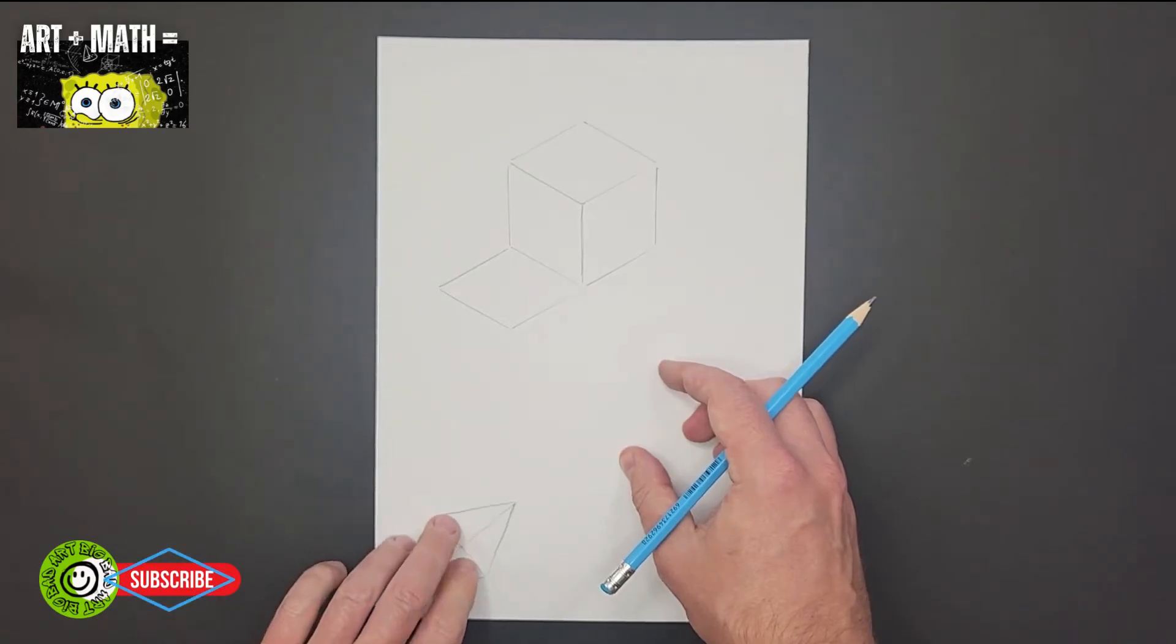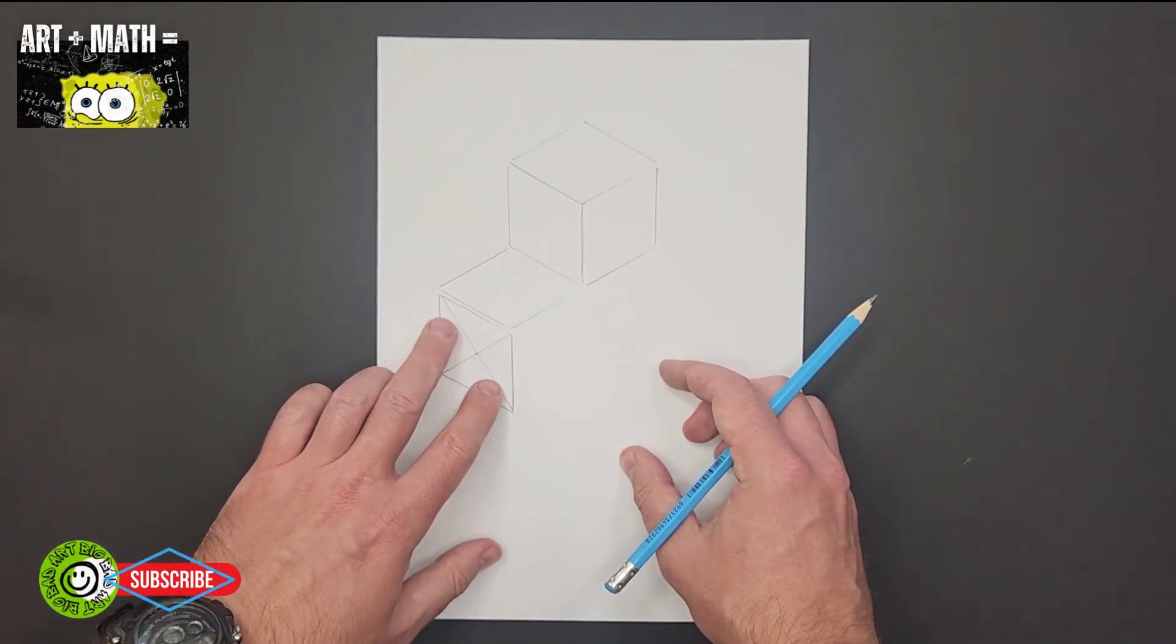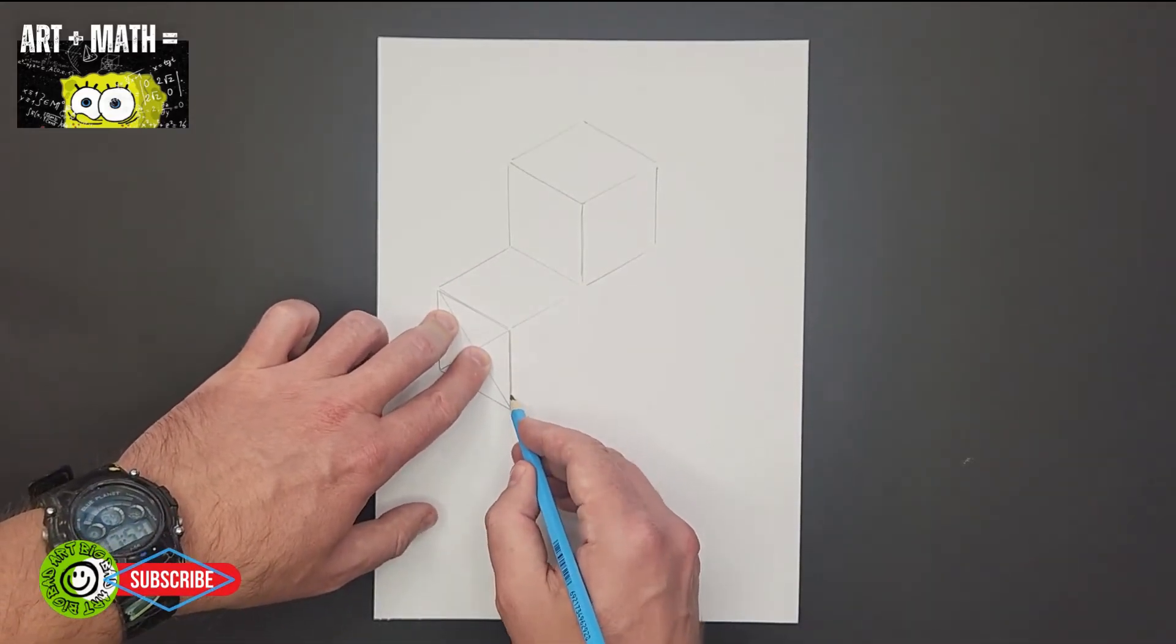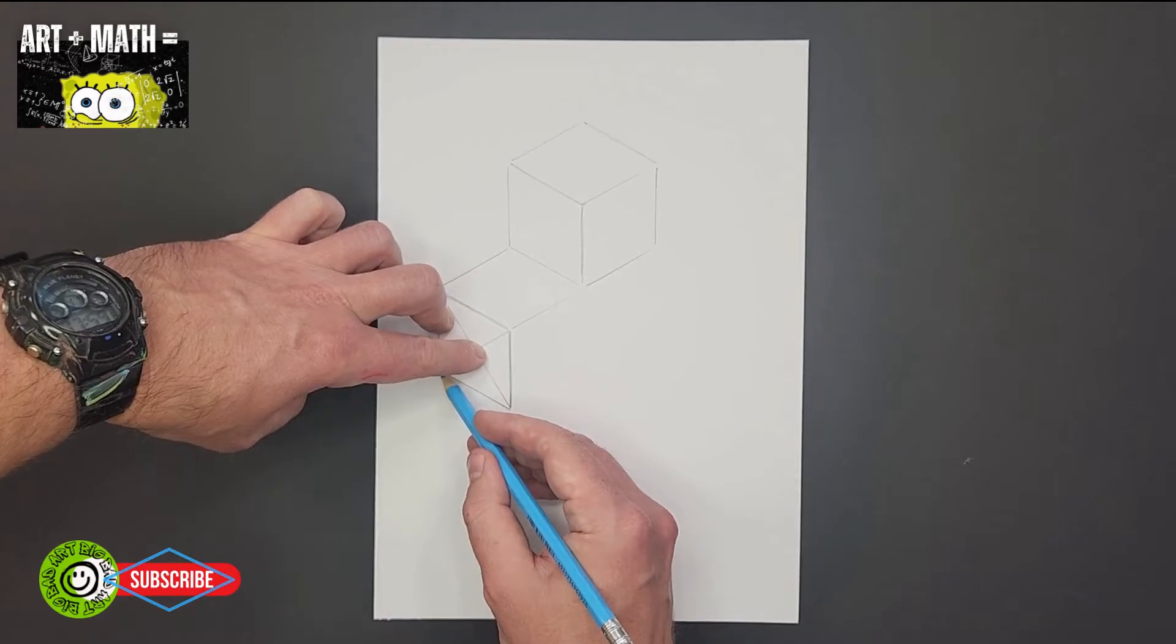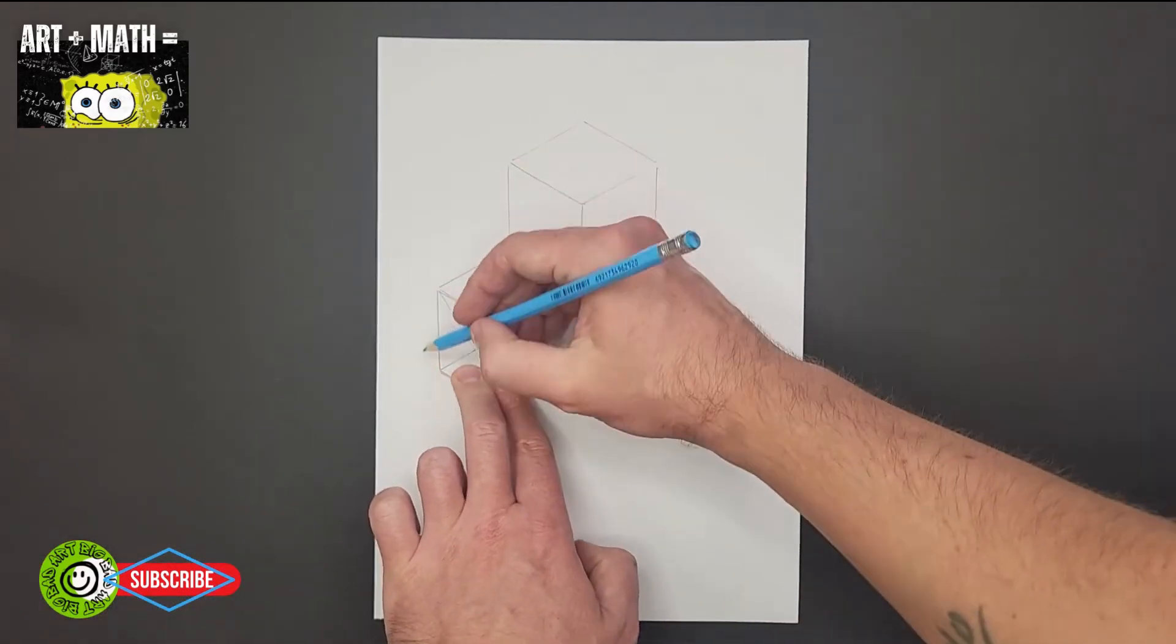Okay, and we draw around it. Okay, like this. And then we repeat the same as before. So we put the rhombus here. Draw around it.